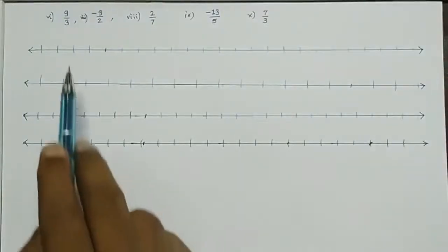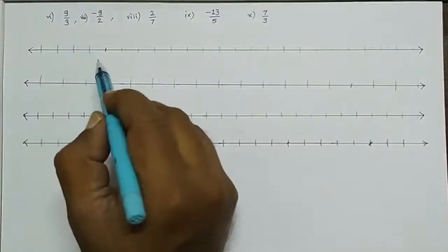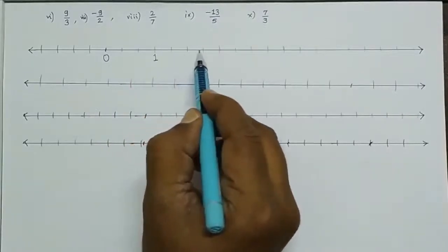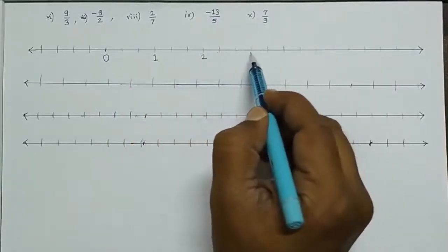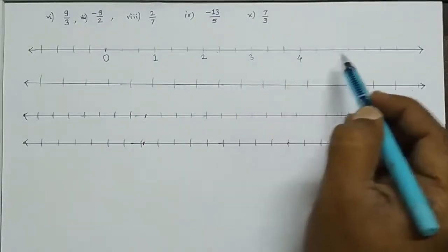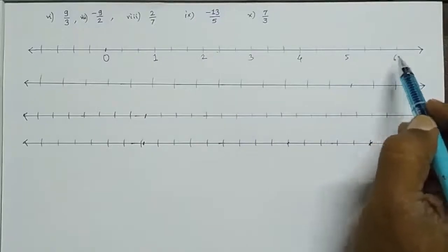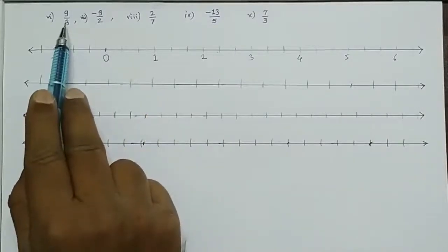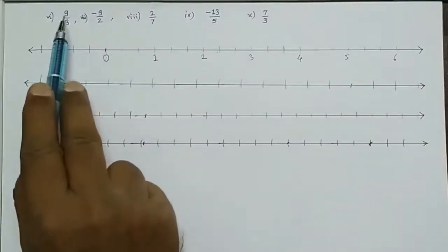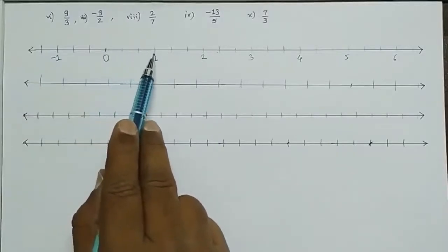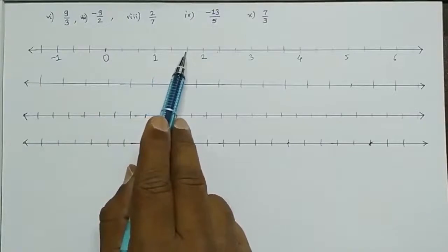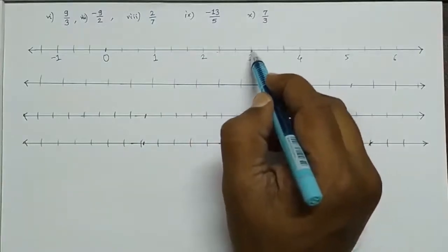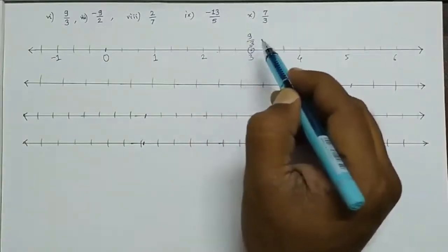Next: 9 upon 3. We make 3 parts of 1 unit. From 0: 1 upon 3, 2 upon 3, 3 upon 3 is 1, and continuing: 4 upon 3, 5 upon 3, 6 upon 3 is 2, 7 upon 3, 8 upon 3, 9 upon 3. So 9 upon 3 equals 3, which is on the number line at position 3.